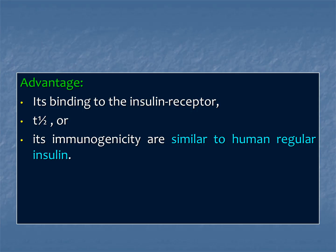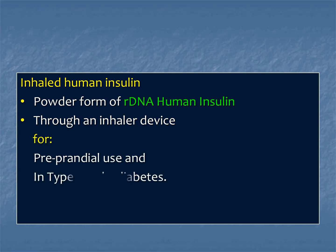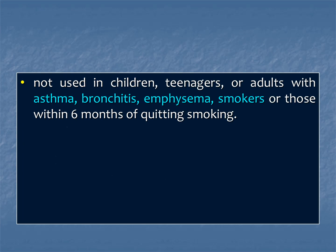The advantages of this group include rapid binding to the insulin receptor. Pharmacological effects are similar to human regular insulin. The inhaled device is used for pre-prandial use before meals in both type 1 and type 2 diabetic patients. However, inhaled insulin is not used in children, teenagers, or those with asthma, bronchitis, emphysema, or smokers — or those within 6 months of quitting smoking.